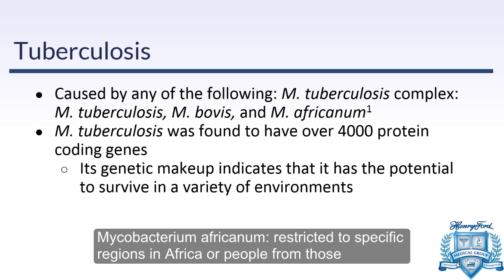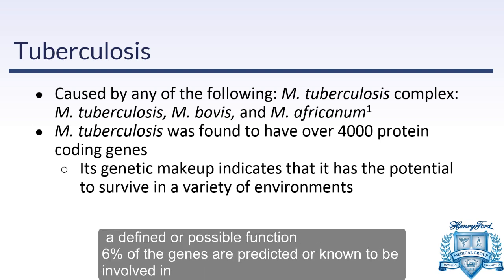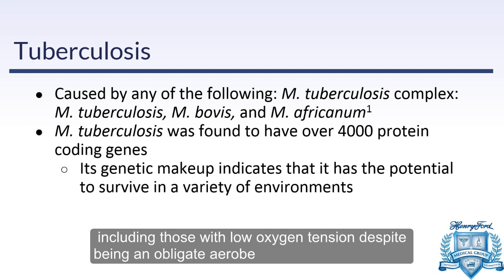The clinical infection tuberculosis can be caused by Mycobacterium tuberculosis, Mycobacterium bovis, and Mycobacterium africanum. Mycobacterium bovis is the strain the BCG vaccine was based off of, and Mycobacterium africanum is only found in a small location in Africa. Research shows this bacteria has over 4,000 protein-coding genes, and because of this, its genetic makeup gives it the potential to survive in many different environments.